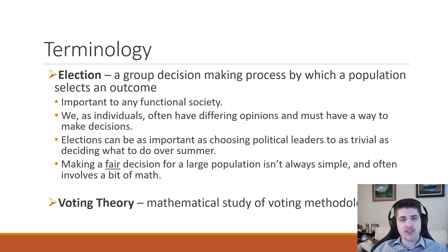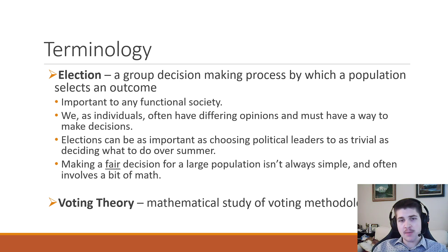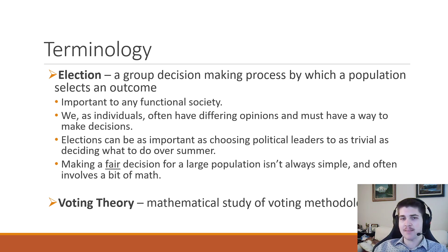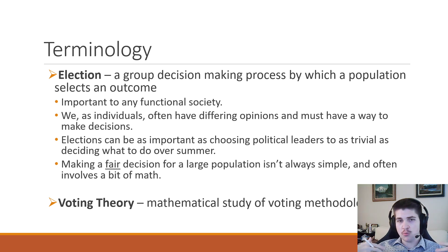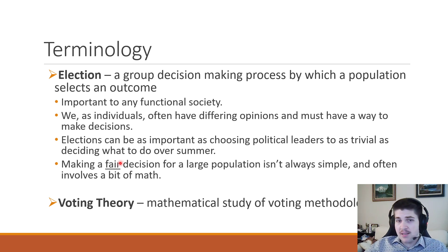An election is basically how we make decisions collectively. As a society, if we want to figure out who should be our leader or who should represent our country, we hold an election to make that determination. There are a lot of different methods of elections that people use across the world, and it's not always consistent with how we do it. We're going to mostly focus on the math behind that, and an emphasis will be on how we make a fair decision — how can we select someone who is basically the best choice?